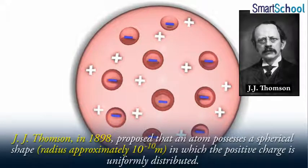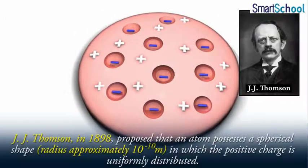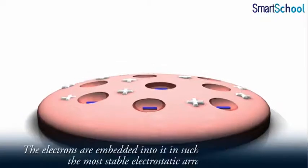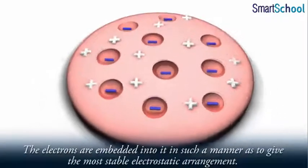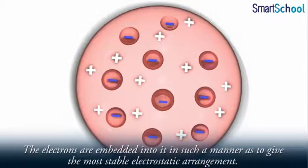in which the positive charge is uniformly distributed. The electrons are embedded into it in such a manner as to give the most stable electrostatic arrangement.